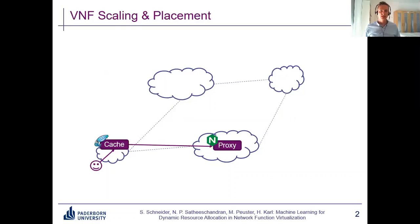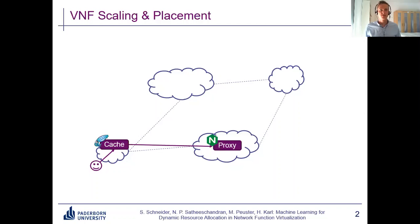In NFV we have these chained VNFs that together provide some kind of service — for example for video streaming, in this case combined of a cache VNF and a proxy or web server. In order to provide the service to our users we need to start instances of these VNFs and run them on compute nodes across the network, where each node has some kind of limited compute capacity.